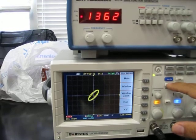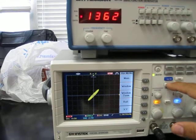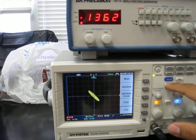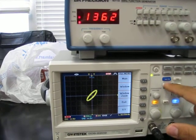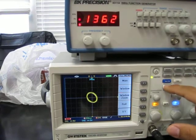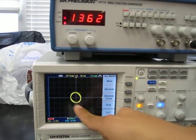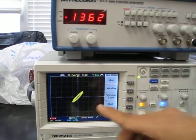I'm going to pause it. When you see a line like this, that's in phase. When you see a circle, that's 90 degrees. And then this line going this way would be 180 degrees out of phase.